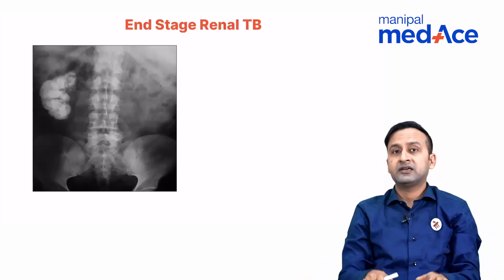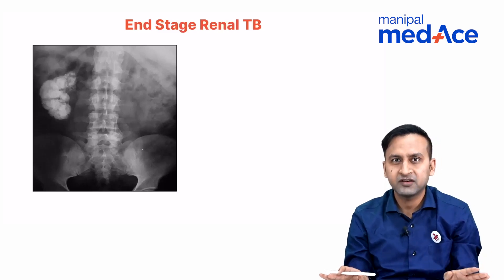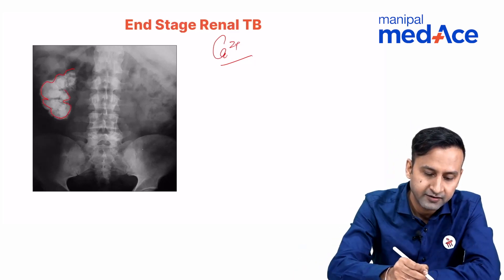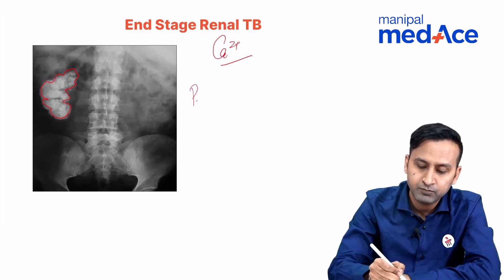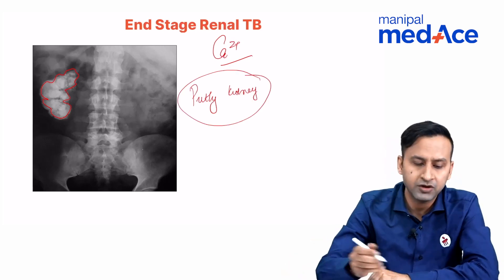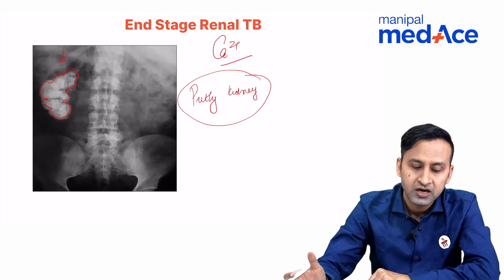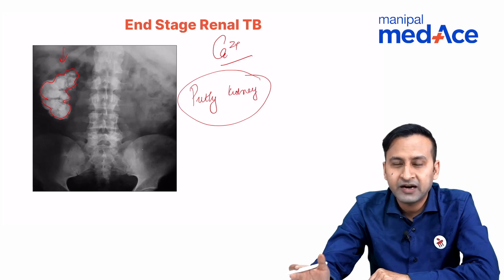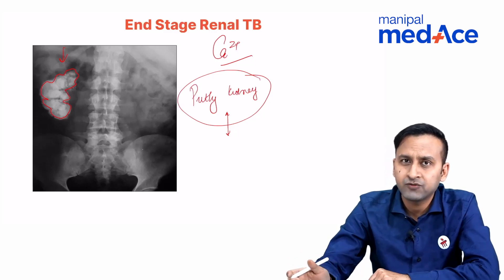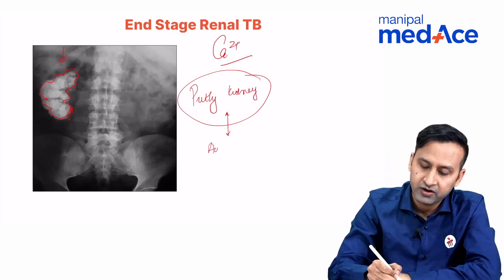What happens when the disease has ended or healed? As with pulmonary tuberculosis, the result of healed infection is calcification. The entire kidney calcifies, giving a reniform contour of calcification — this is called the putty kidney. This is extremely important for exams, as image-based questions frequently show dense calcification of the renal shadow and ask for the diagnosis. The putty kidney represents end-stage renal tuberculosis. Once the kidney undergoes complete non-function, the body cuts off its blood supply and the kidney becomes smaller — this is called autonephrectomy.